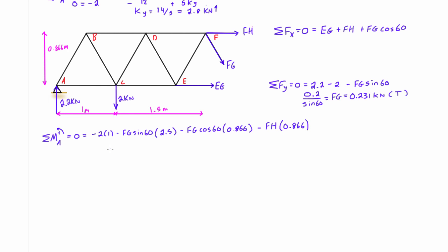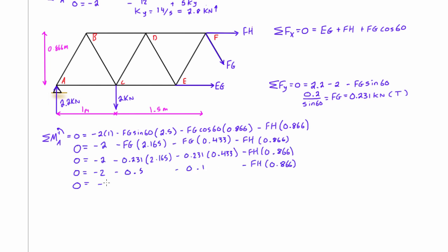Alright, so we can go ahead and simplify this a little bit more and we'll find out that Fh is actually negative 3 kilonewtons which means it's in compression. So that's why we have this C here in brackets for compression whereas here when it was in tension we just leave a little t there just to keep track.